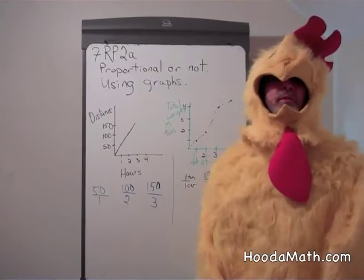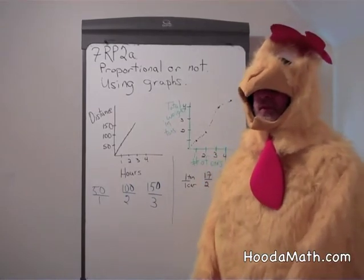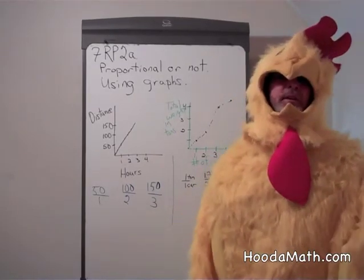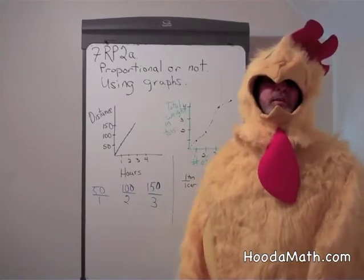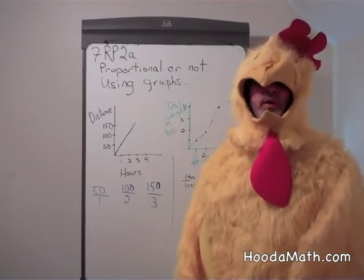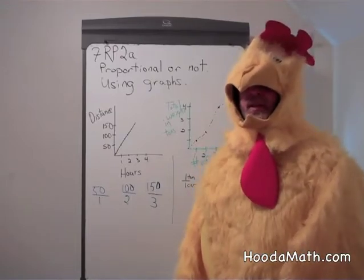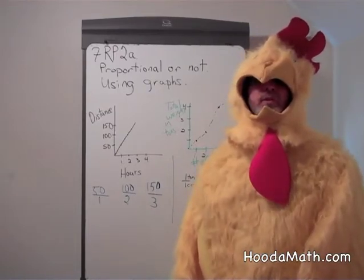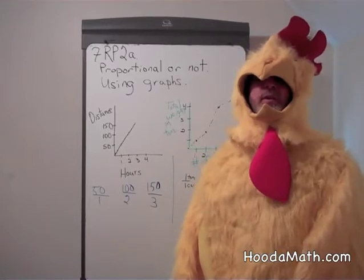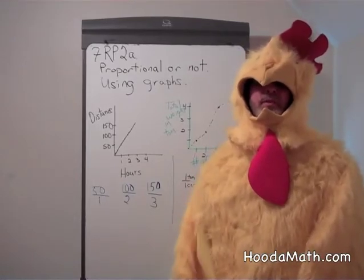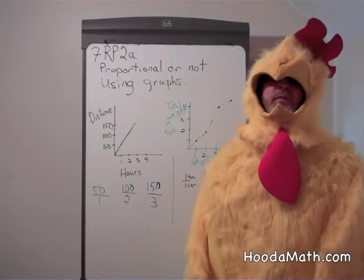what I want to do is tell you a little known chicken fact. The largest chicken egg ever laid was 12 ounces or three quarters of a pound and almost 12 and a quarter inches around. Oh, it sounds painful to lay.